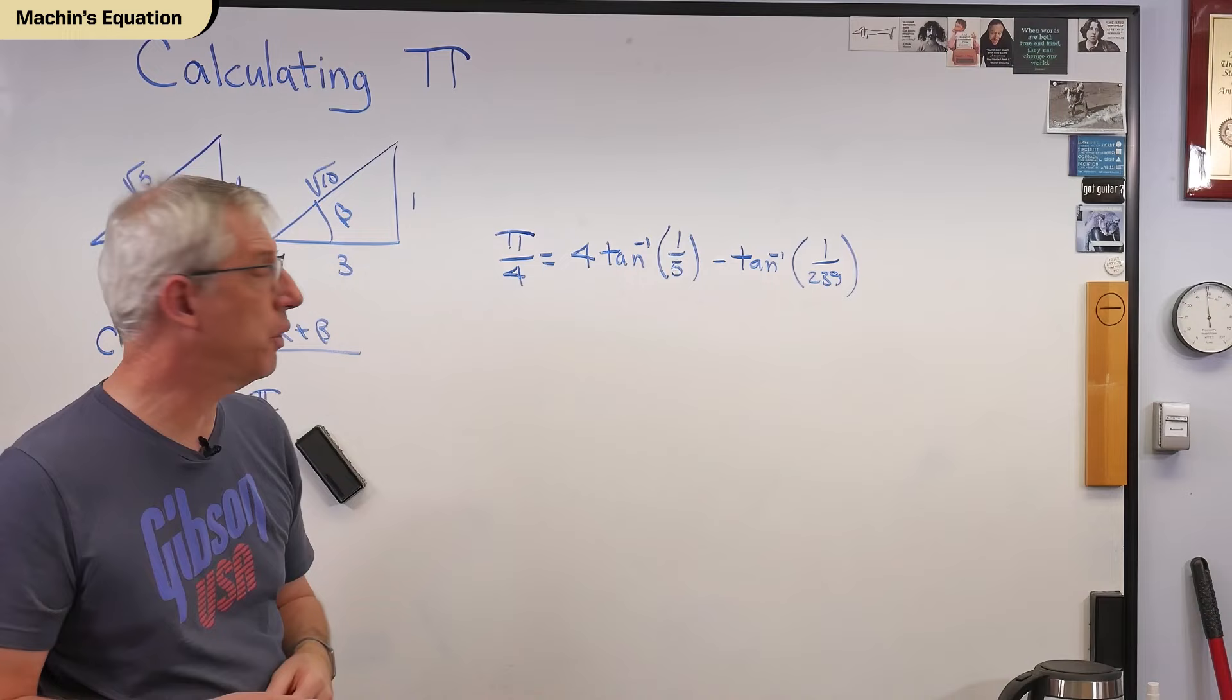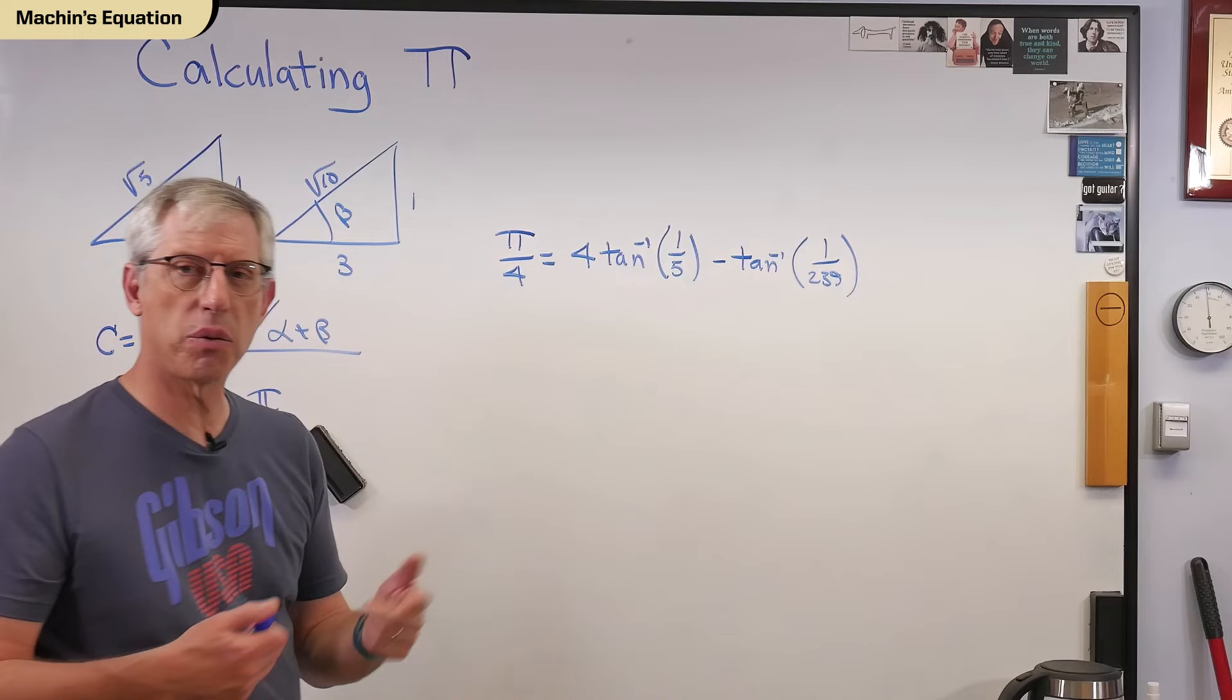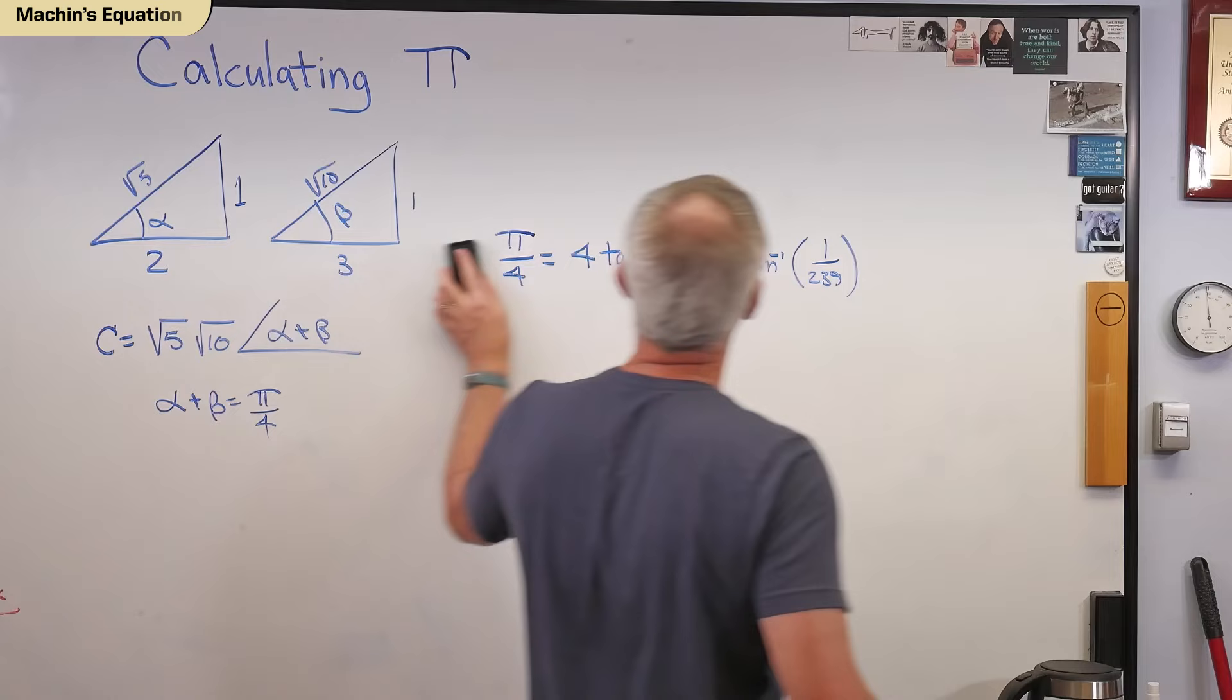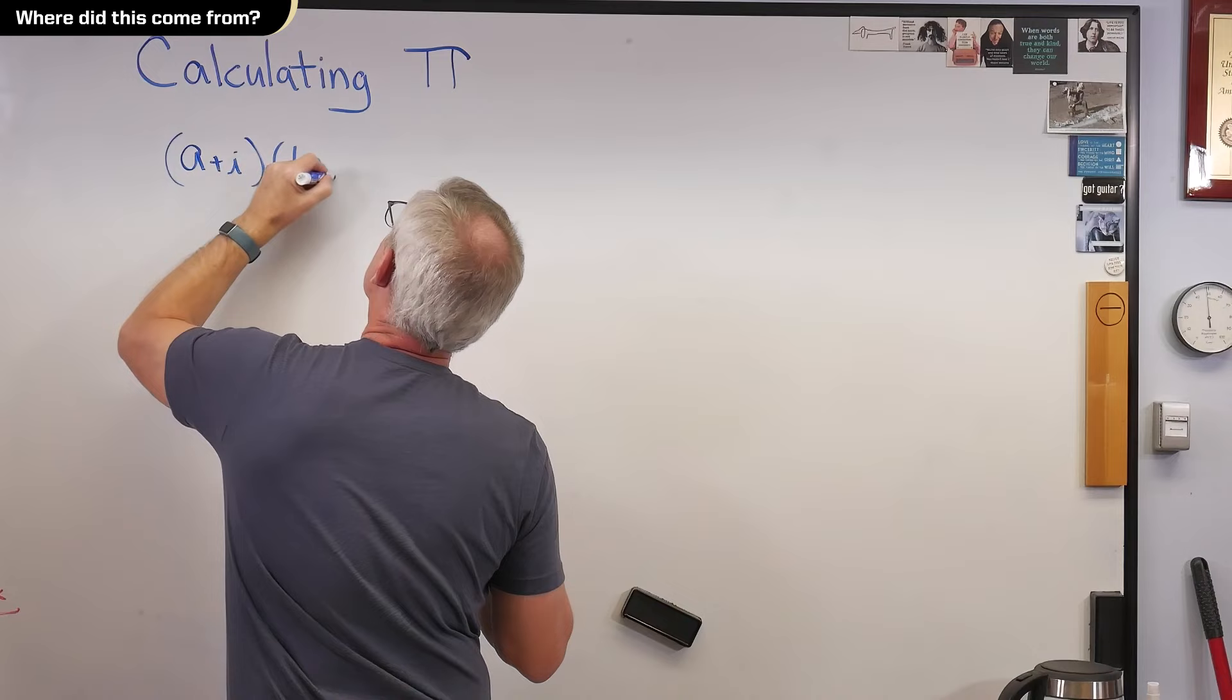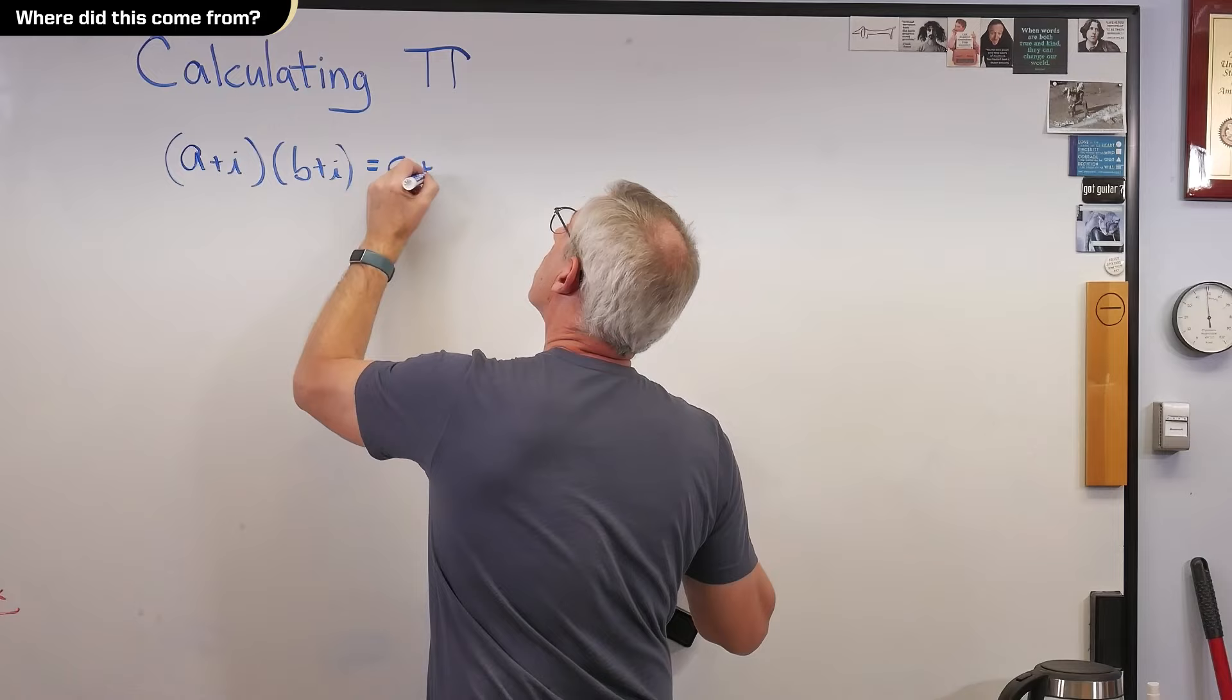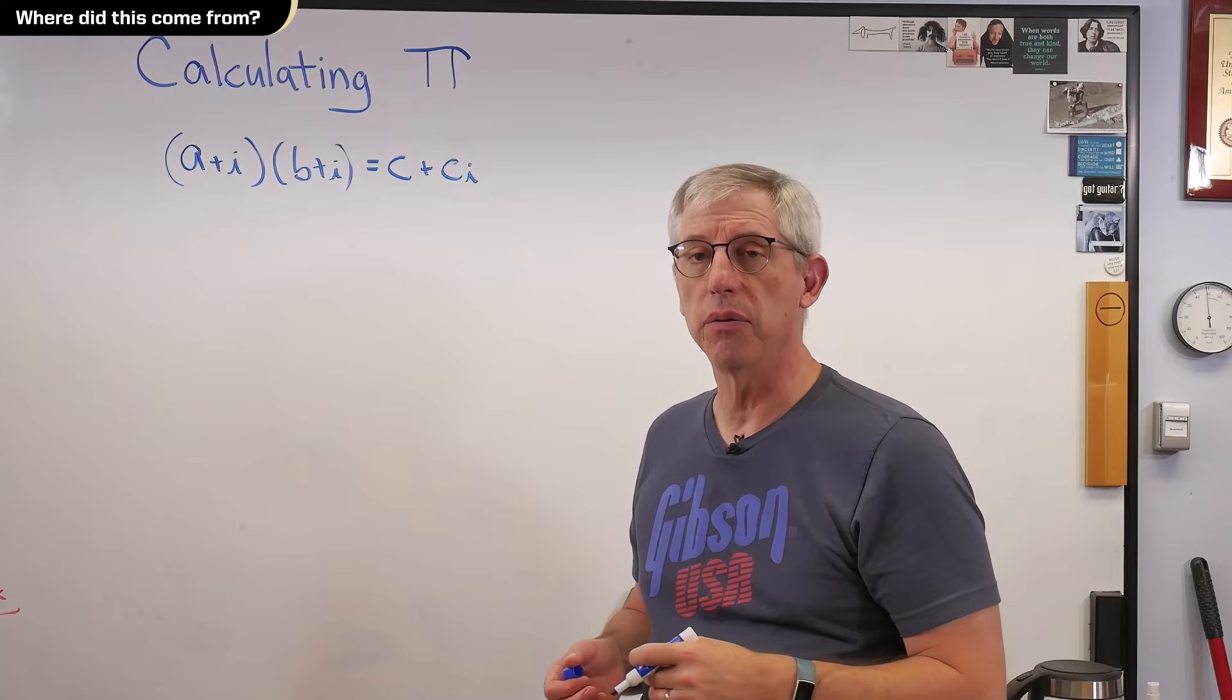Before we go to my computer, let's do one more thing. Let's see if we can have a more general idea of where that one half and one third, or where this came from. Let's take the real simple case here. a plus i, b plus i. And that has to equal c plus ci. Because for theta to be, for the final angle, to be 45 degrees, or pi over 4, the real and imaginary term have to be equal.